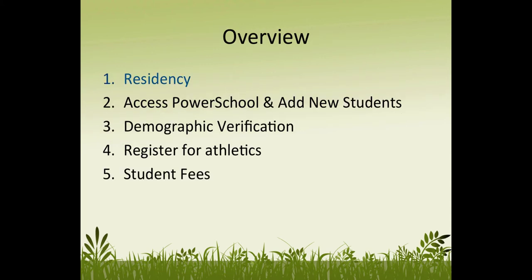The online registration process is five parts. We'll begin by confirming residency, then we can log into PowerSchool and add any new students. We'll verify the demographics for each student, then we can register for athletics and pay any student fees.